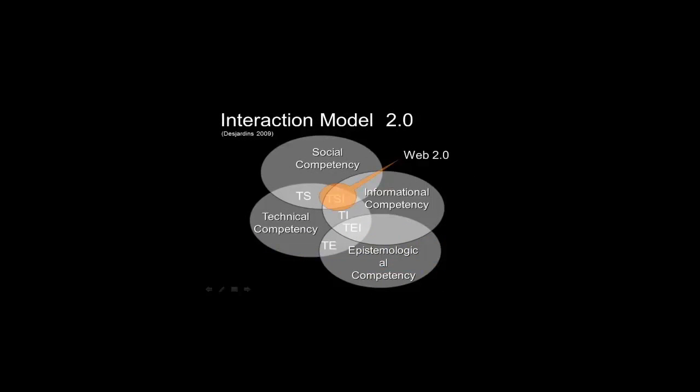According to the Desjardins Interaction Model (Desjardins 2009), Web 2.0 technologies lie at the intersection of the technical, the social, and the informational orders. Consequently, competencies required for each of these orders should be required in order to work in a proficient manner with technologies that have affordances of this nature.